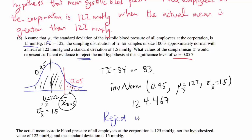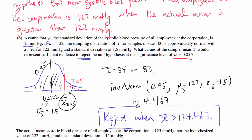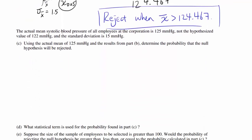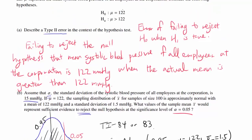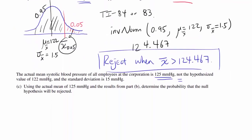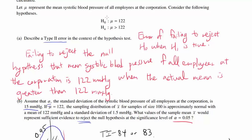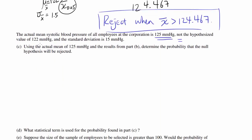So we reject when the sample mean is greater than 124.467. Part C: The actual mean systolic blood pressure of all employees at the corporation is 125 — not the hypothesized value of 122 — and the standard deviation is 15. So the null hypothesis was wrong; the actual mean is 125, meaning the alternative hypothesis was correct. We want to reject H0, so using the actual mean of 125 and the results from part B, we need to determine the probability that the null hypothesis will be rejected.